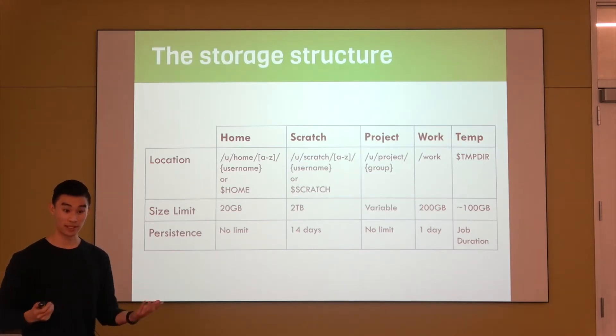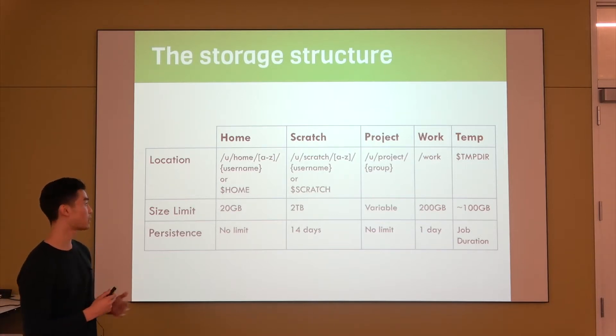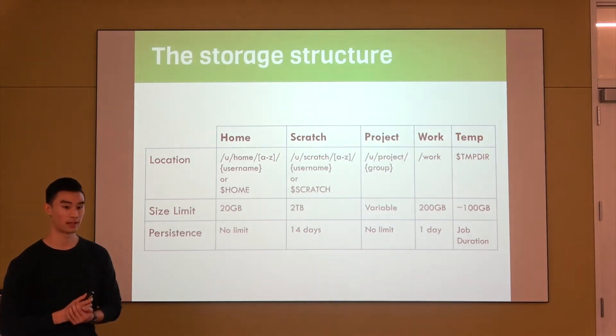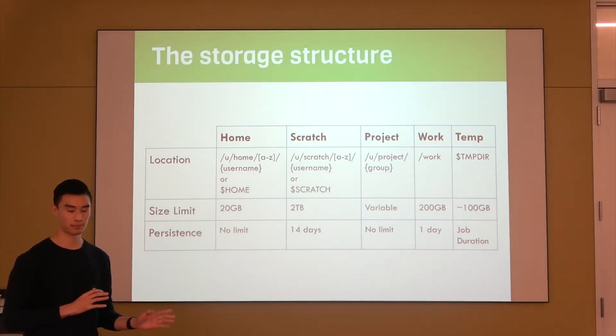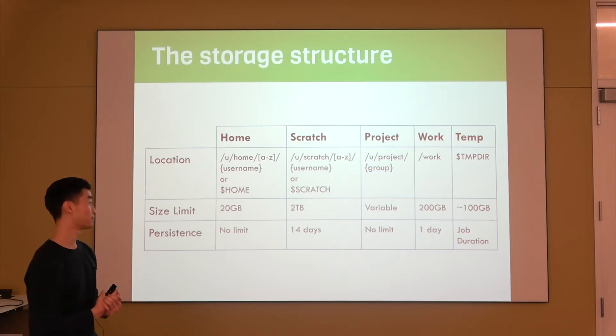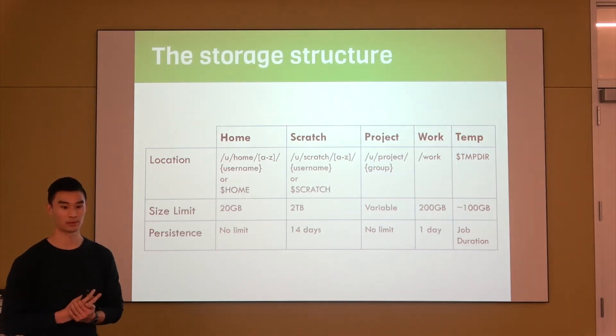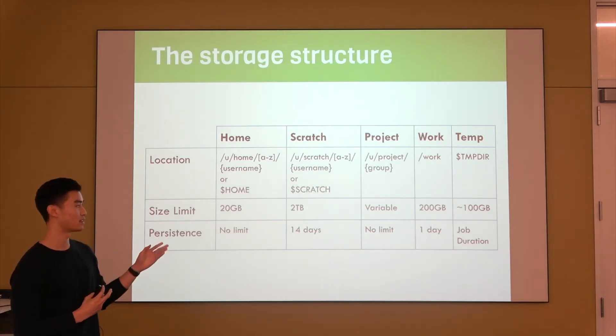Where you would want to keep big data safe and for a long time—and maybe to be safer than scratch—is the project directory, and this will be specific to your lab. Your PI will purchase some storage on Hoffman and they'll have a project directory. This is where you store your lab-specific files, and they're persistent, so you can keep things here safely. They're typically backed up as well. If they're not backed up, it'll indicate it in the path that it's a no-backup drive.